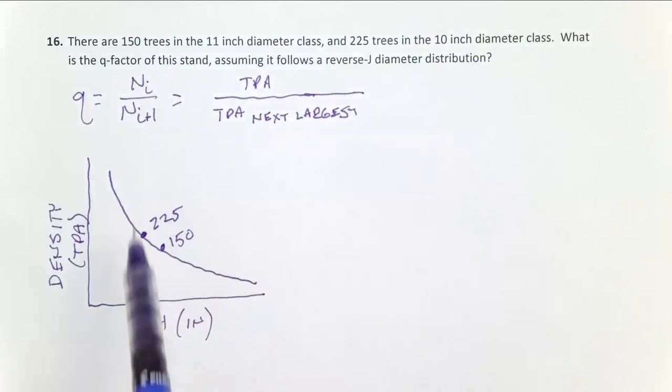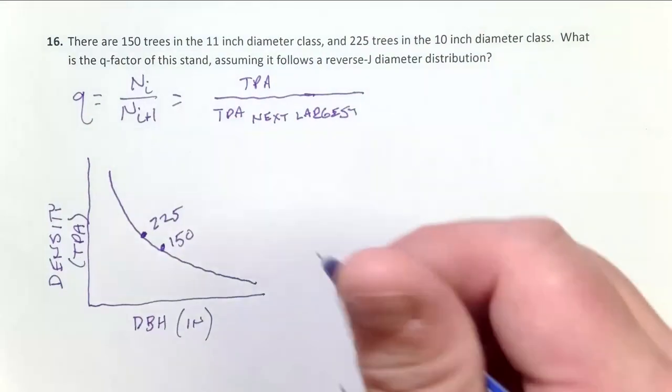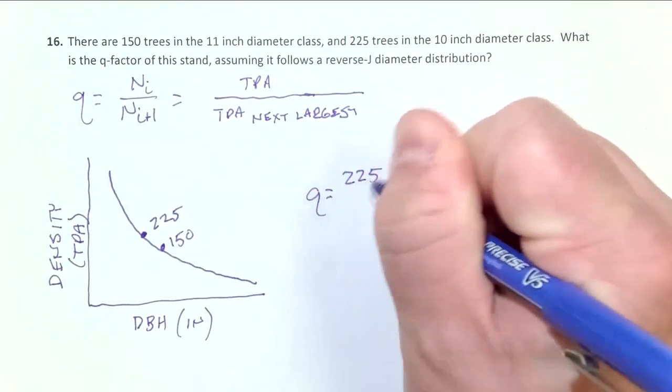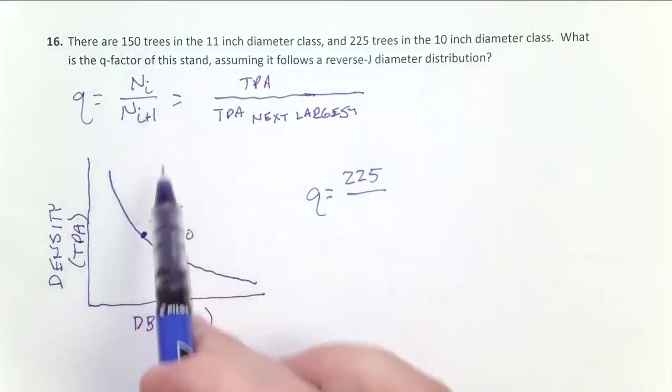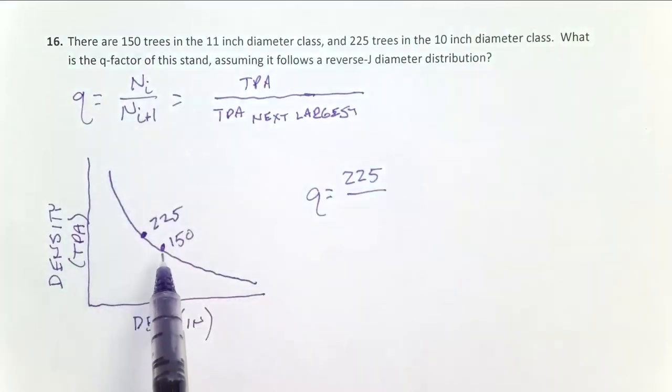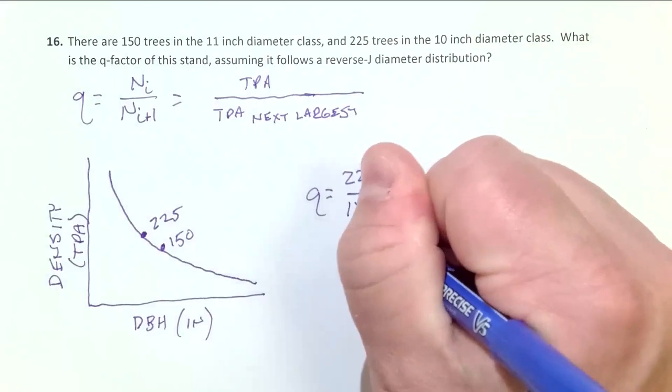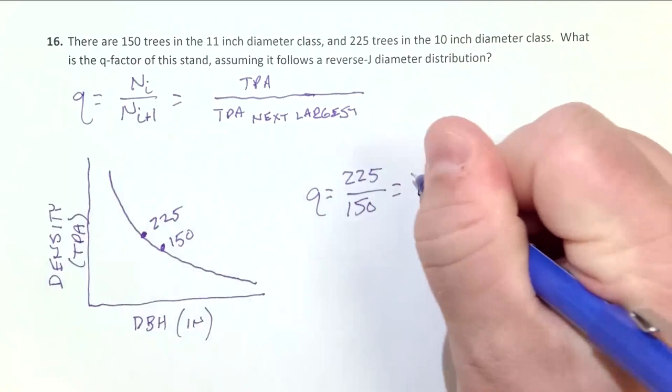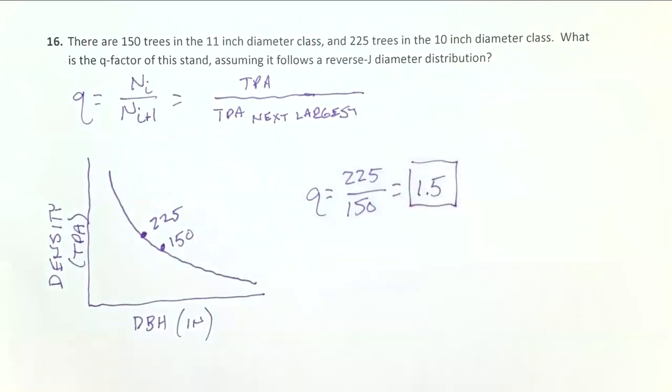And so now, if I want to plug in math for this equation, N sub i, so our 10-inch size class is N sub i, 225. So Q equals 225 divided by N sub i plus 1, the number of trees in the next largest size class, 150. And this equals 1.5. It's unitless, it's just a ratio. So that's our Q factor on this particular stand. And so we assumed it followed reverse J diameter distribution.